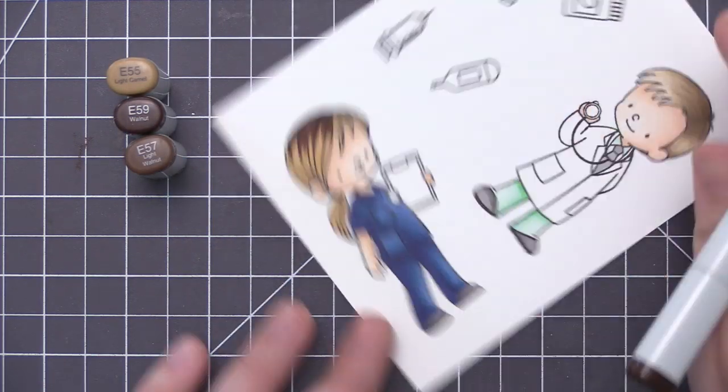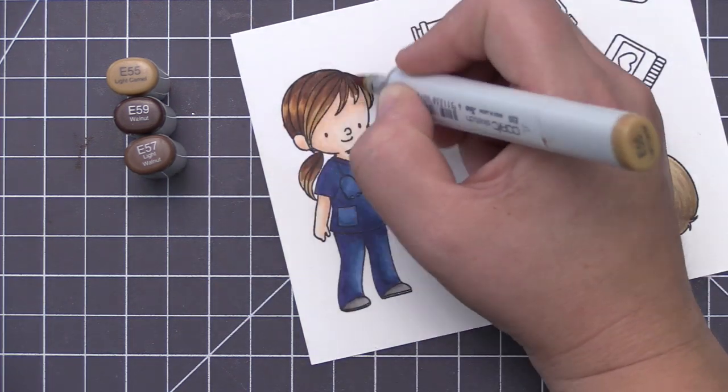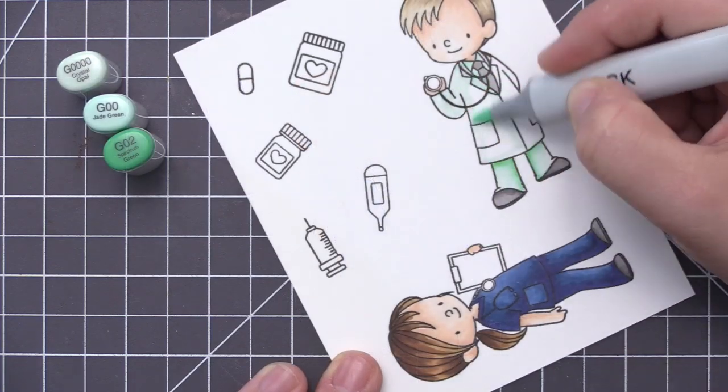I went ahead and colored her hair brown, so I used E55, 57, and 59. This is usually my go-to color combination anytime I want to do brown hair.